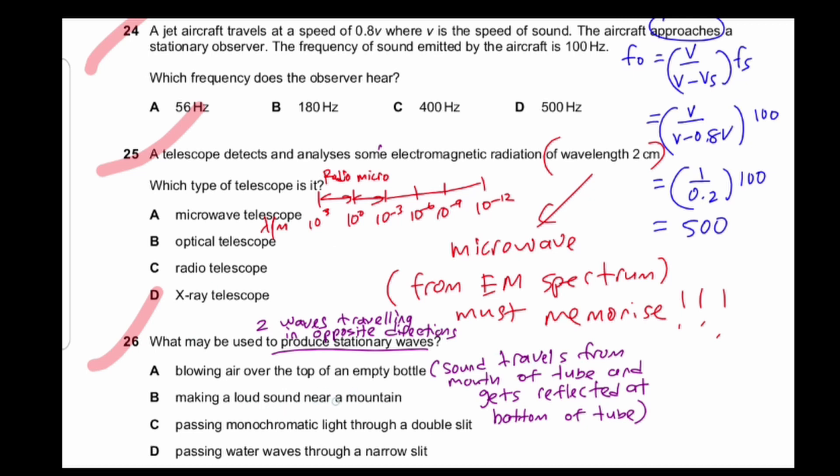So why B can't? B is actually more on echo. It's reflected in different directions, not opposite. That's why you cannot use B.